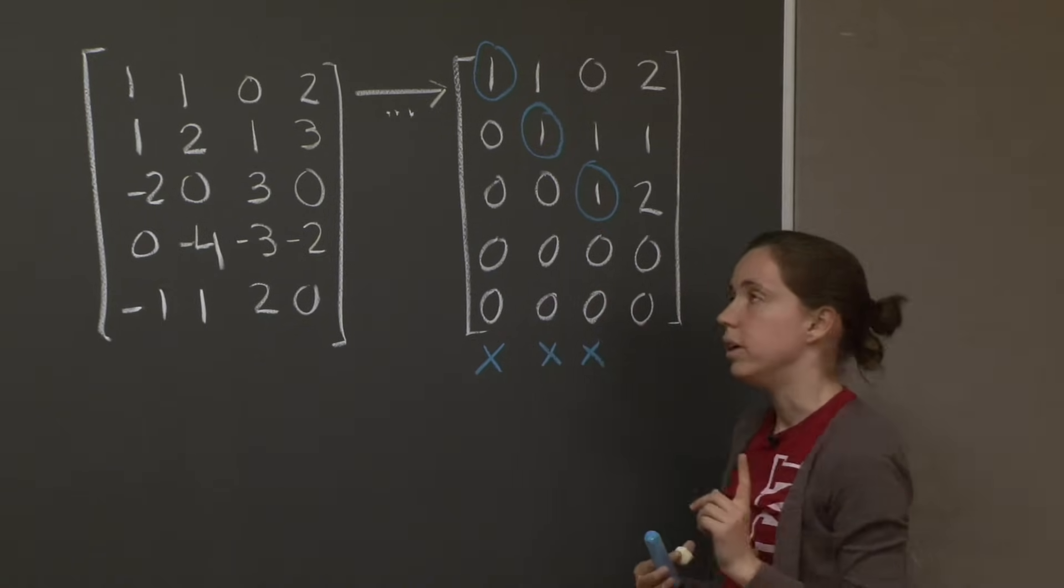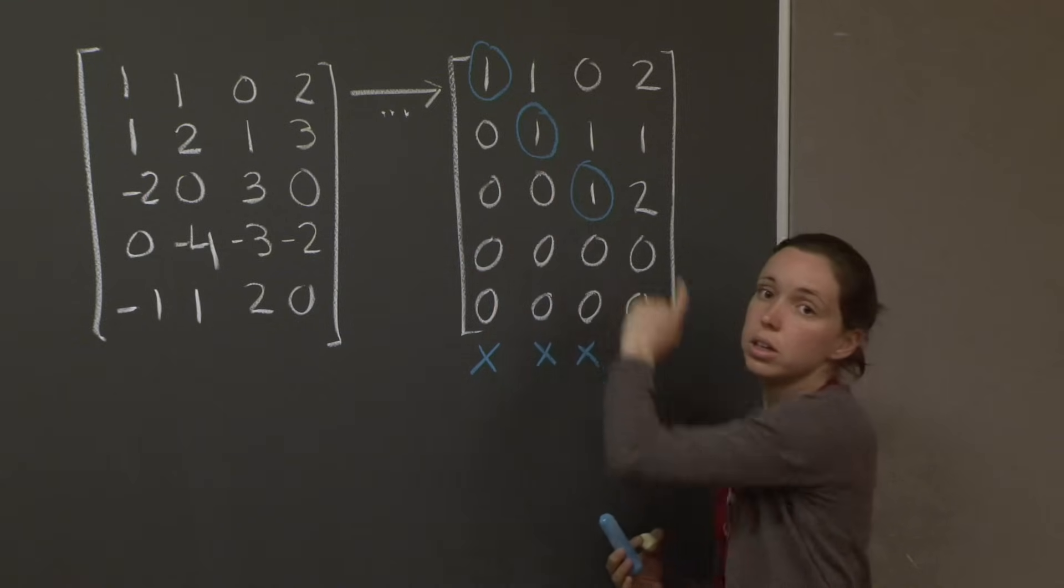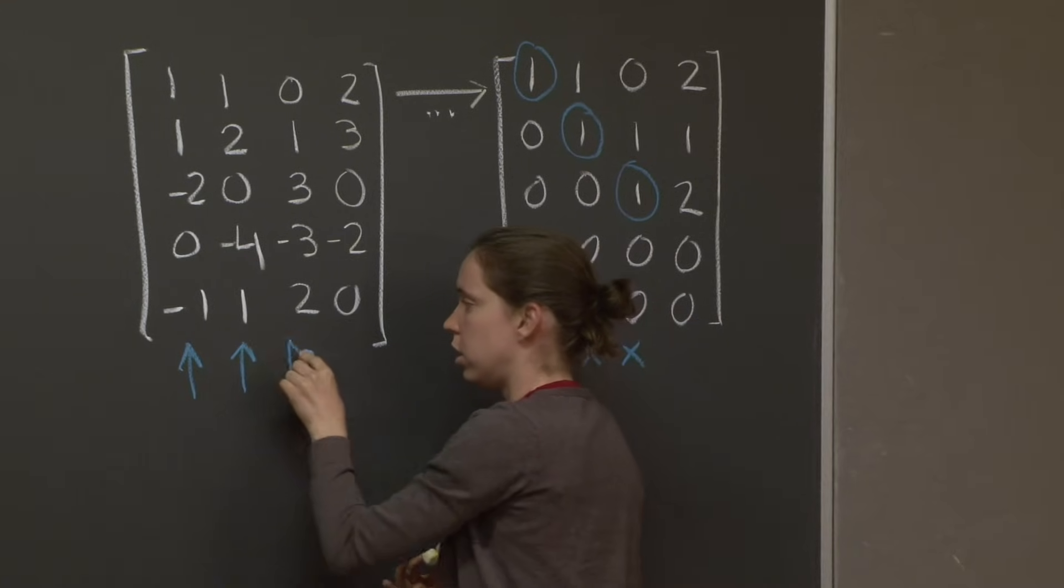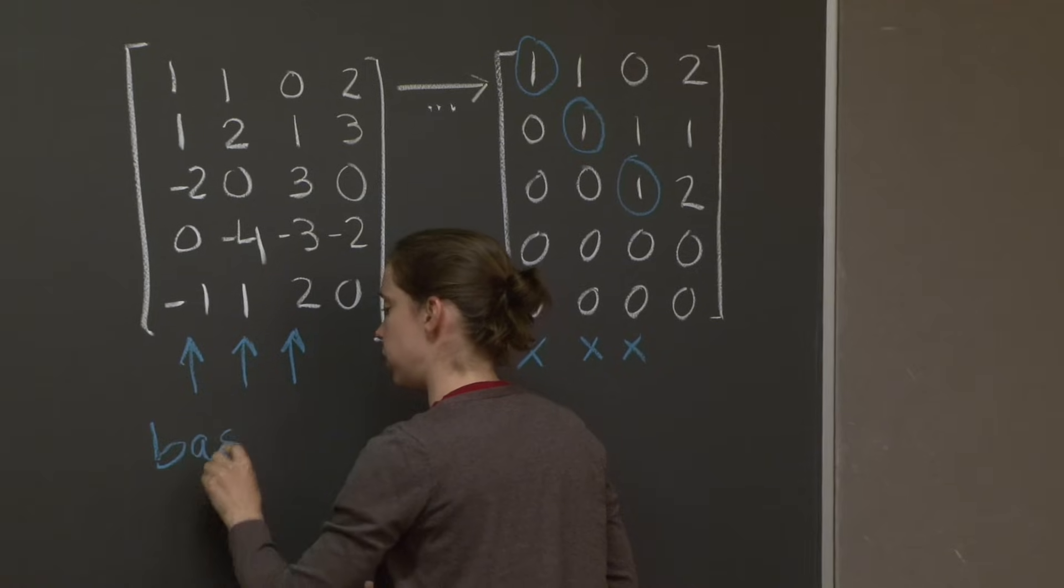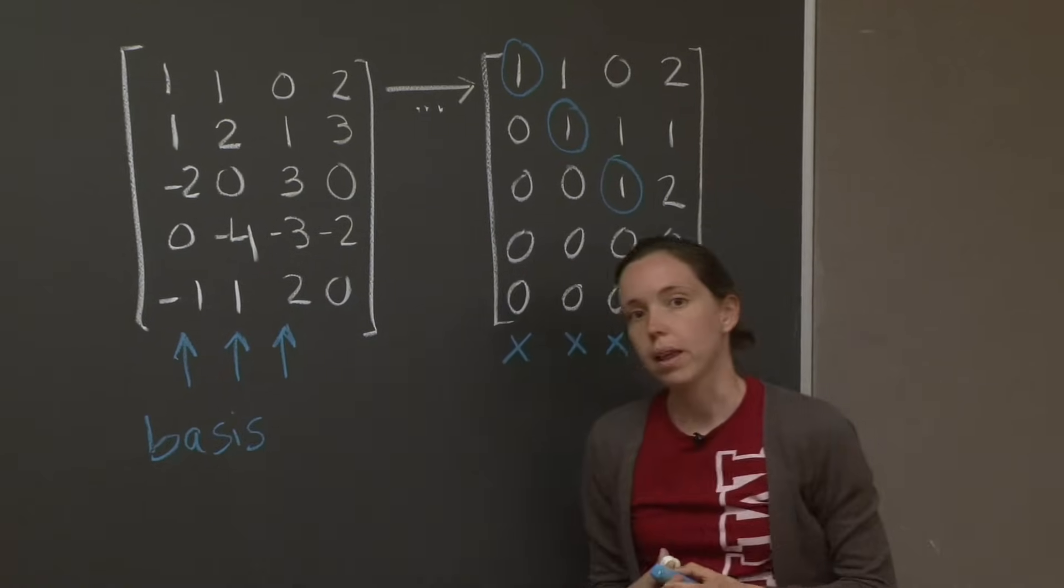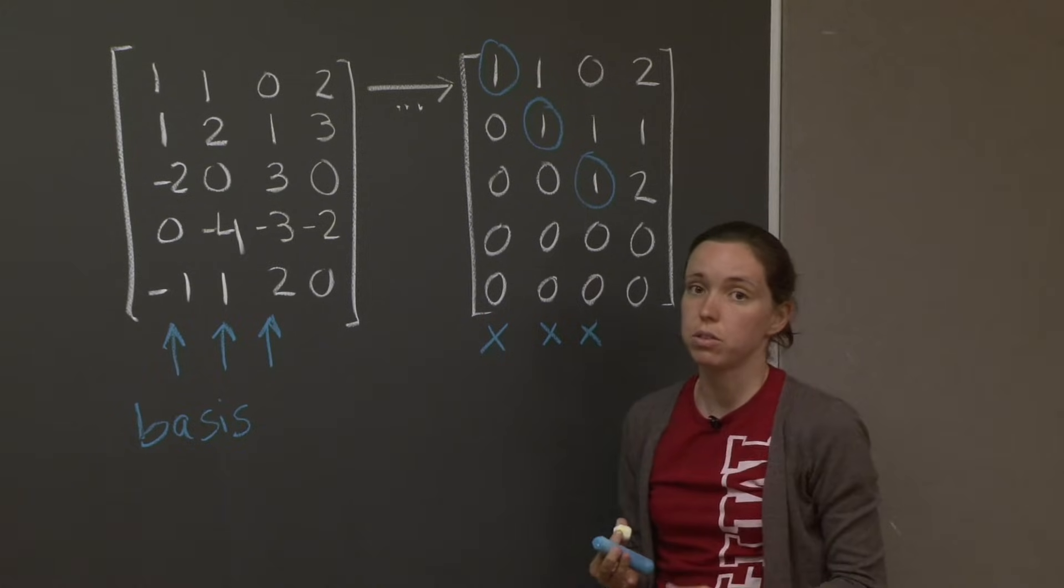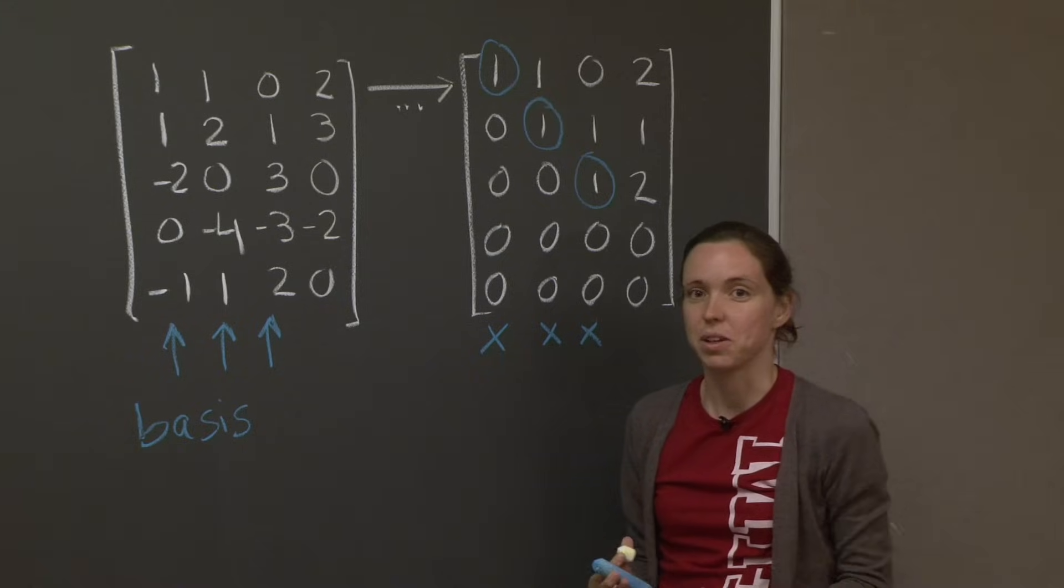So what I need to do is, the pivots are in the first, second, and third columns. I need to use these three columns as my bases. I'll just write bases down here. And that will work too. So see, I have produced two different bases for the same vector space, which is totally fine. You can pick the bases that you prefer.